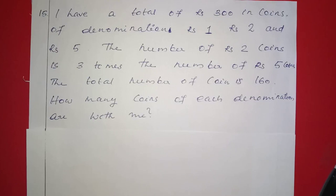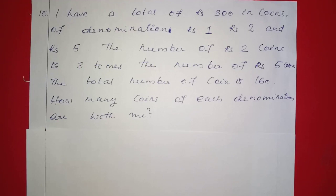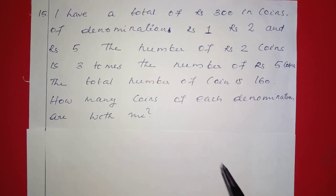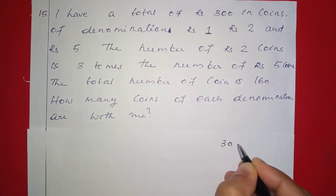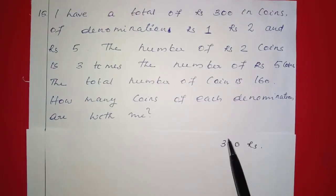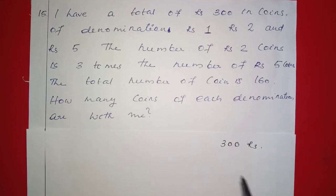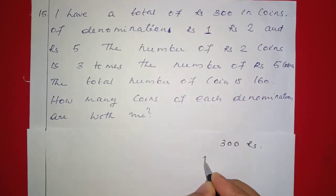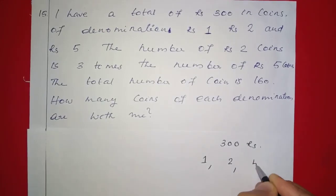I have a total of 300 rupees in coins of denomination 1 rupee, 2 rupees, and 5 rupees. The number of 2 rupees coins is 3 times the number of 5 rupees coins. The total number of coins is 160. How many coins of each denomination are with me?